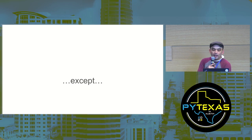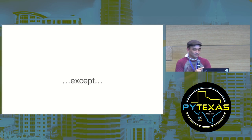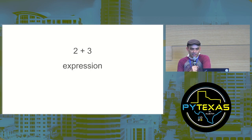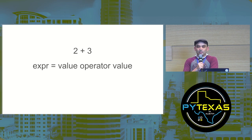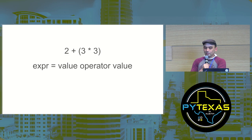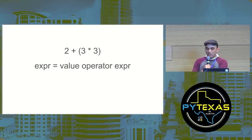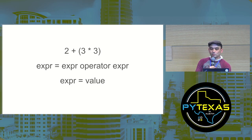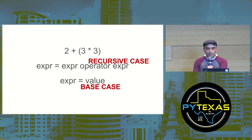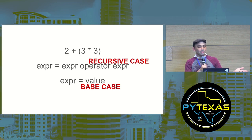Except there is one area where recursion comes in handy. Consider the Python expression two plus three. An expression is made up of values connected by operators — two and three are values, plus is an operator. We can define an expression as 'value operator value.' But expressions can be more complicated: two plus three times three — here our expression is 'value operator expression.' And a value by itself is also an expression — it's an expression that evaluates to itself.